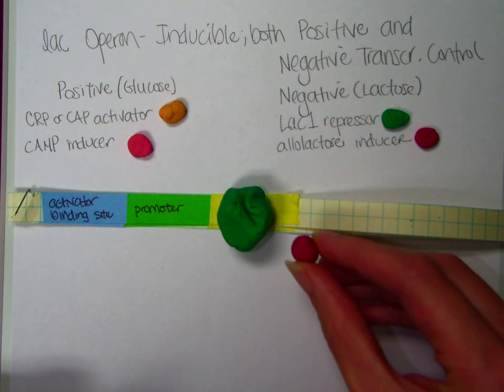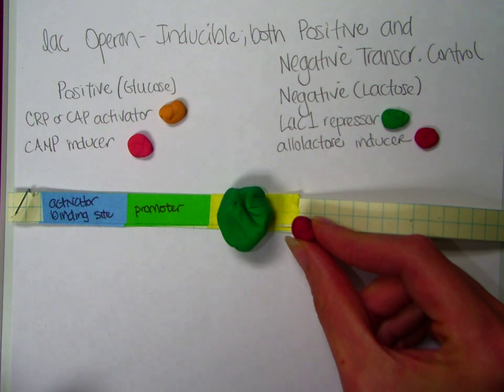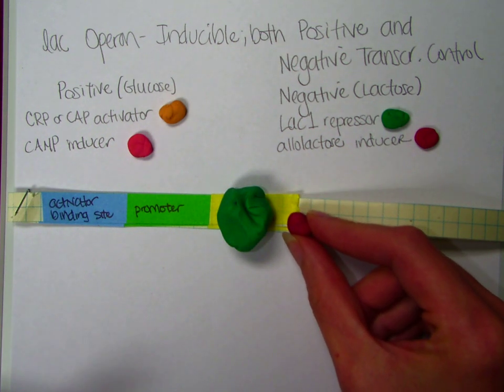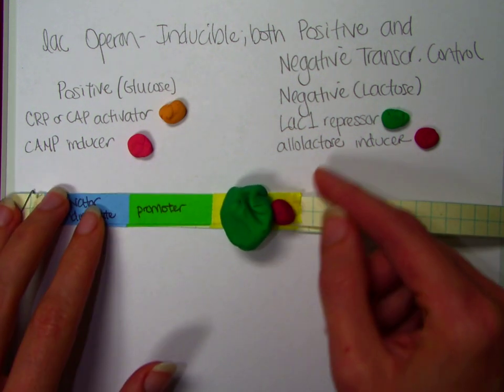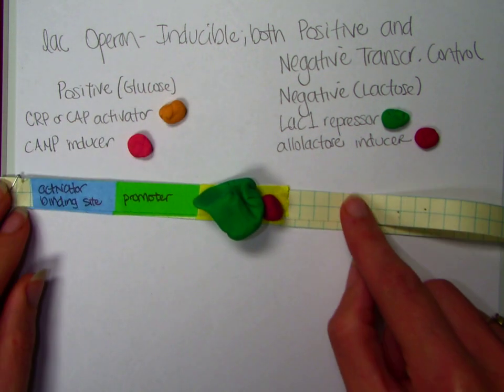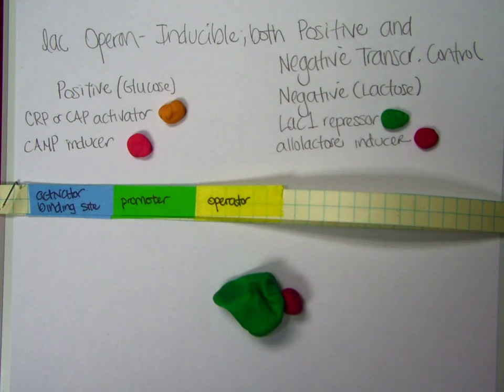So if there is lactose present, then the allolactose, which is the metabolic product of lactose, is going to function as the inducer. So the allolactose is going to be in the cytoplasm, it's going to bind to the lac1 repressor, change the shape of the repressor, and cause the repressor to detach from the DNA and go into the cytoplasm.